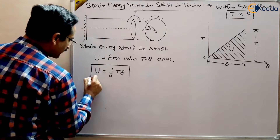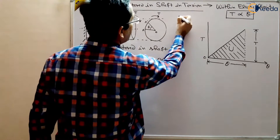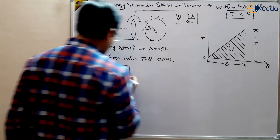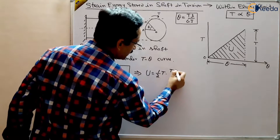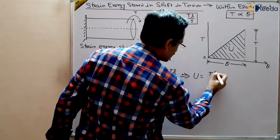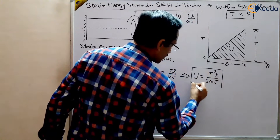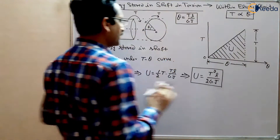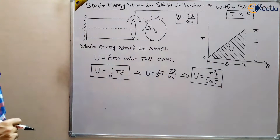The energy stored is half base multiplied by height, so U = ½Tθ. This is the strain energy stored in the material. Now, theta is given by θ = TL / GJ. Substituting, the strain energy stored equals ½T multiplied by TL/GJ, which gives us U = T²L / (2GJ). This is the strain energy stored in the material when a torque T is applied within the elastic limit.